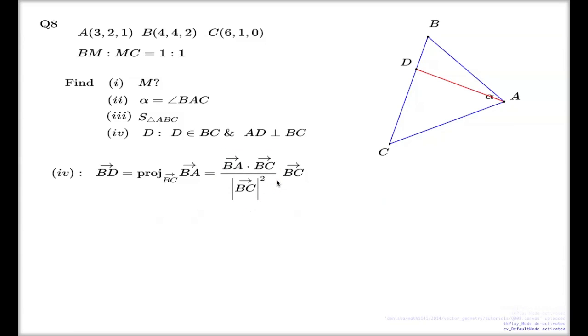All I have to do now is sub in the values. Of course, I can find the components of the vectors BA and BC. So BA vector: negative 1, negative 2, and negative 1, right? We subtract these components from these components.